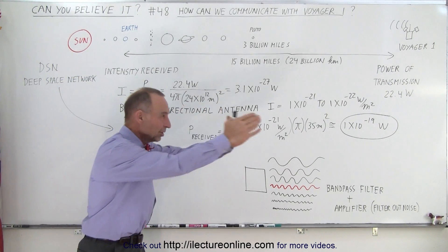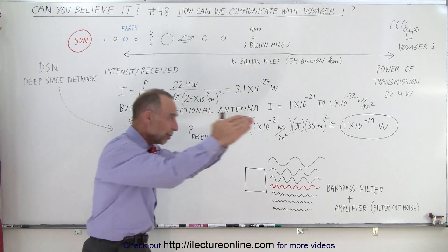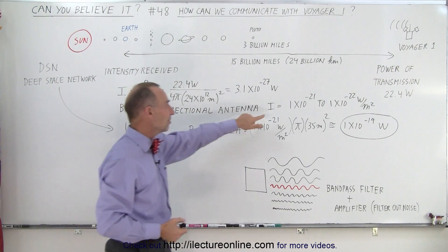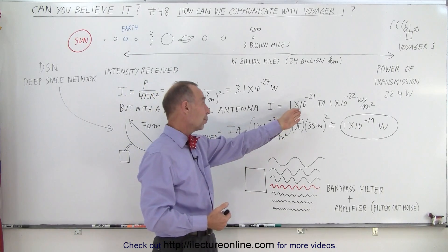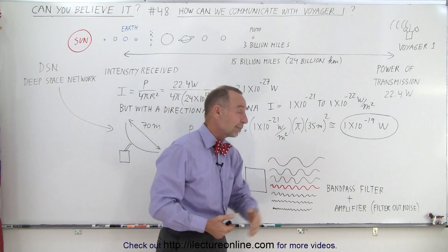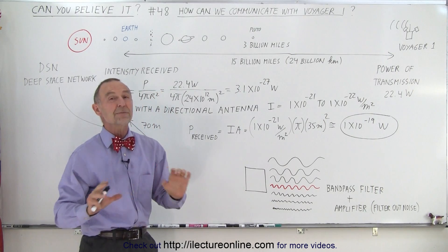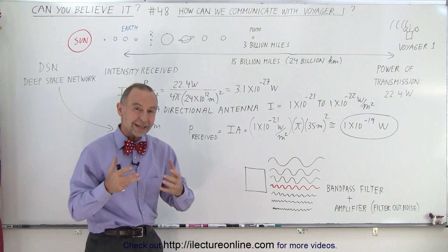But they were using a directional antenna where they put most of the power in the direction of the Earth, and so they were able to boost the signal strength so that the intensity of the signal by the time it gets to us is somewhere between 1 × 10^-21 and 1 × 10^-22 watts per square meter, which is still extremely faint.